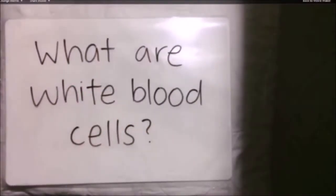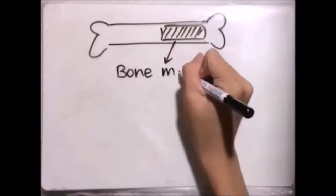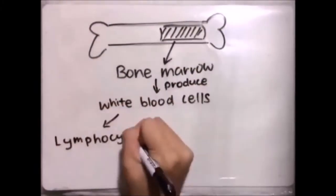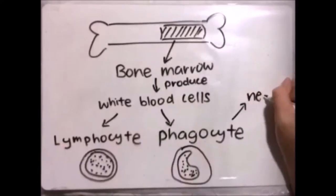What are white blood cells? White blood cells are one of the cells the body makes to help fight infection. White blood cells are created in the bone marrow. They are lymphocytes and phagocytes, two kinds of white blood cells.